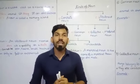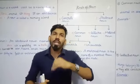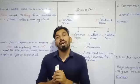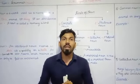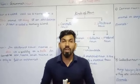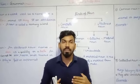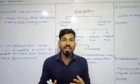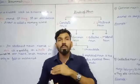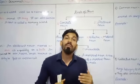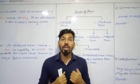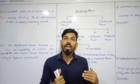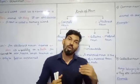In the world, whatever things are present, each and every one has its own name. Take an example of a person — I, you, our parents, our friends, every person on this earth has their own name for identifying them. That particular name is called a noun.